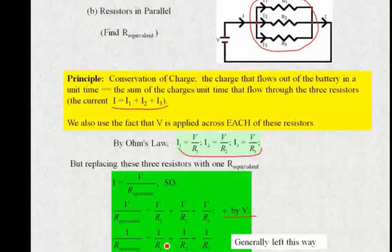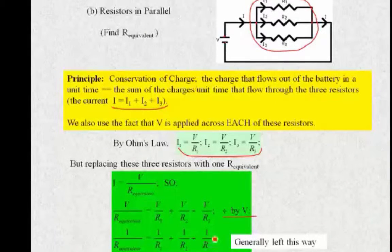We normally just leave this equation as is. So if we have just three, if these are numerically known, we would just form this sum and then flip it to get the R_equivalent. But this is the most useful form of the equation.